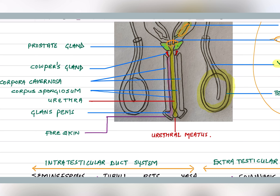The corpus spongiosum and corpora cavernosa are the erectile tissue masses in the penis. The urethra runs throughout the penis, with corpus spongiosum surrounding it and corpora cavernosa on the outside.